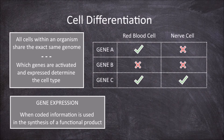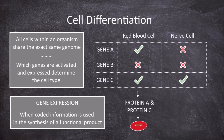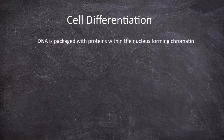For the red blood cell, gene A and gene C encode for proteins A and C. These proteins affect the structure and function of the cell, which creates the red blood cell. For the nerve cell, gene C encodes for protein C. This protein affects the structure and function of the cell, creating the nerve cell. DNA is packaged with proteins called histones within the nucleus of the cell, forming chromatin.